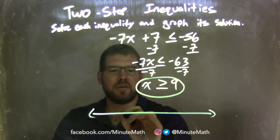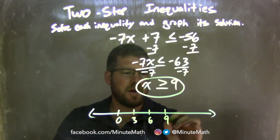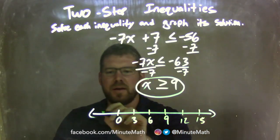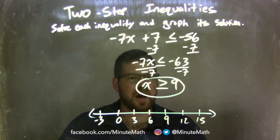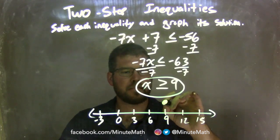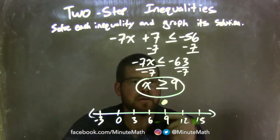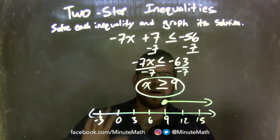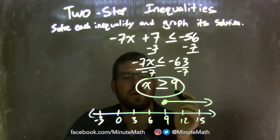Now we need to graph — x is isolated. Let's go by 3s: 3, 6, 9, 12, 15, and negative 3. x is greater than or equal to 9, so I have a closed circle at 9. Since x is greater than that, I'm going to put my arrow to the right. My graph matches my inequality, where x is greater than or equal to 9.